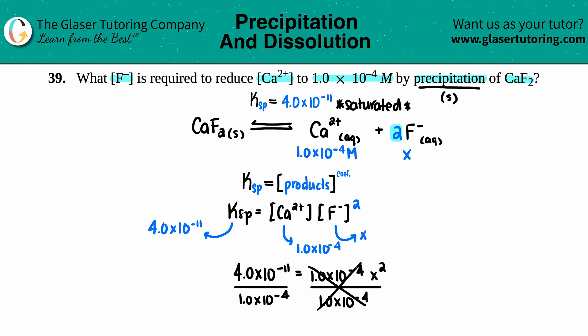So 4 × 10^-11 divided by 1.0 × 10^-4, and I get 4.0 × 10^-7 equals x². Take the square root—gotta do it on both sides to be fair. This cancels out, so now we're just left with x.